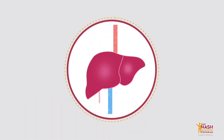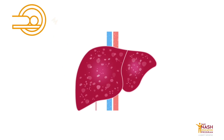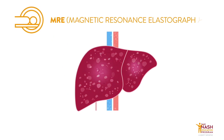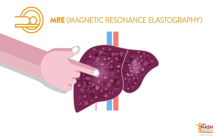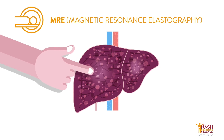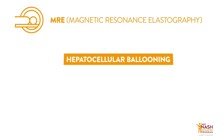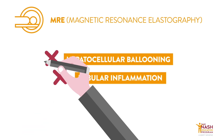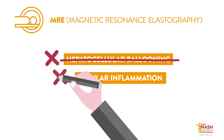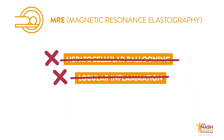But none of these technologies were developed specifically to assess NASH. For example, MRE can quantify liver stiffness, which is correlated to the extent of fibrosis in the liver, and is hence a promising technique to assess liver fibrosis. However, it is not able to determine how much hepatocellular ballooning and lobular inflammation exists, which is a key hallmark of NASH.